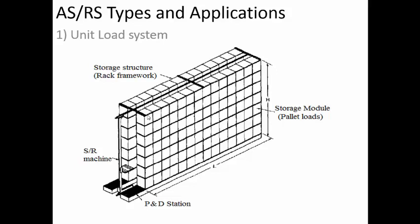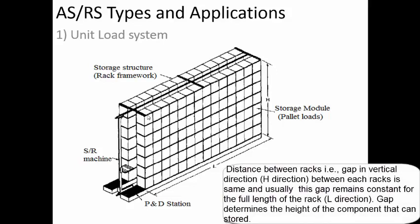The racks will have a pallet, and on top of the pallet the workpieces are mounted. The pallet will be placed inside the racks whenever it is to be stored, and taken out whenever it is required for processing. The distance between the racks will be uniform throughout, so a lot of space is wasted because of the uniform gap between the various racks.